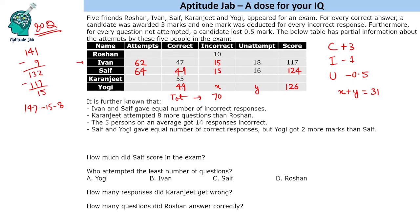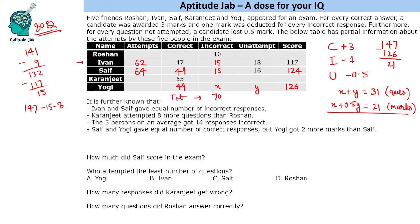How many marks is Yogi losing? 49 times 3 is 147, minus 126, so he lost 21 marks. X is the number of incorrect responses — each loses 1 mark — and each unattempted question loses half a mark, so the equation is X plus Y/2 equals 21. Solving the two equations gives Y equals 20 and X equals 11. So we can put 11 incorrect and 20 unattempted for Yogi.